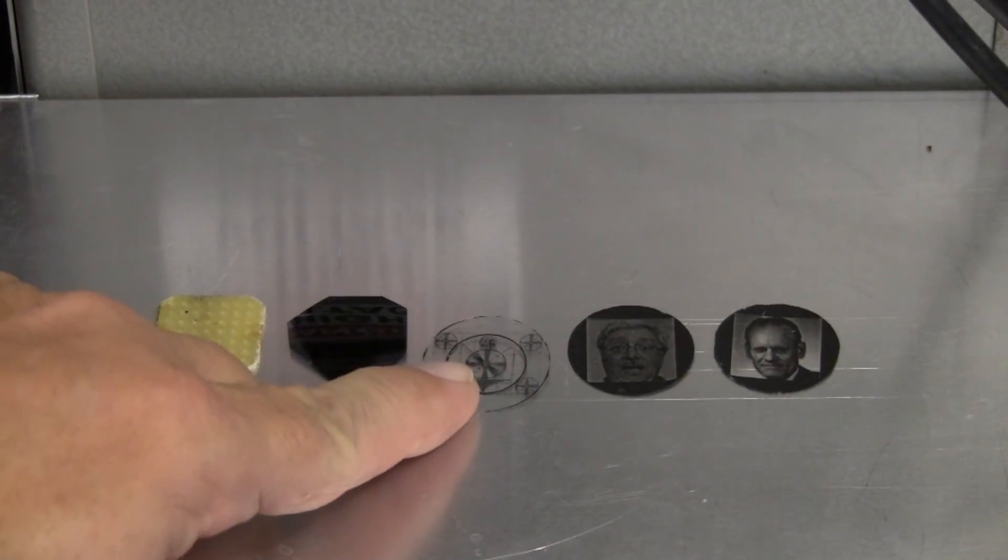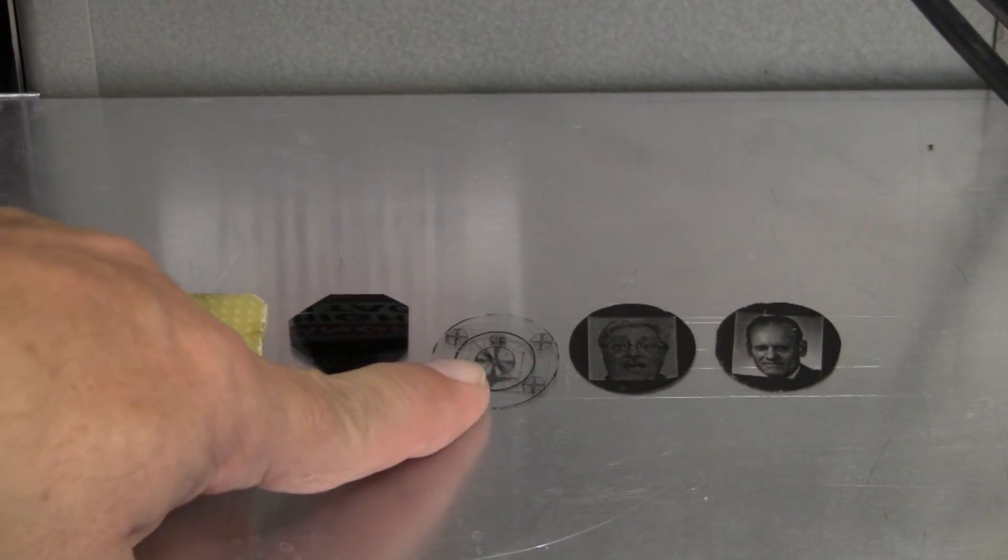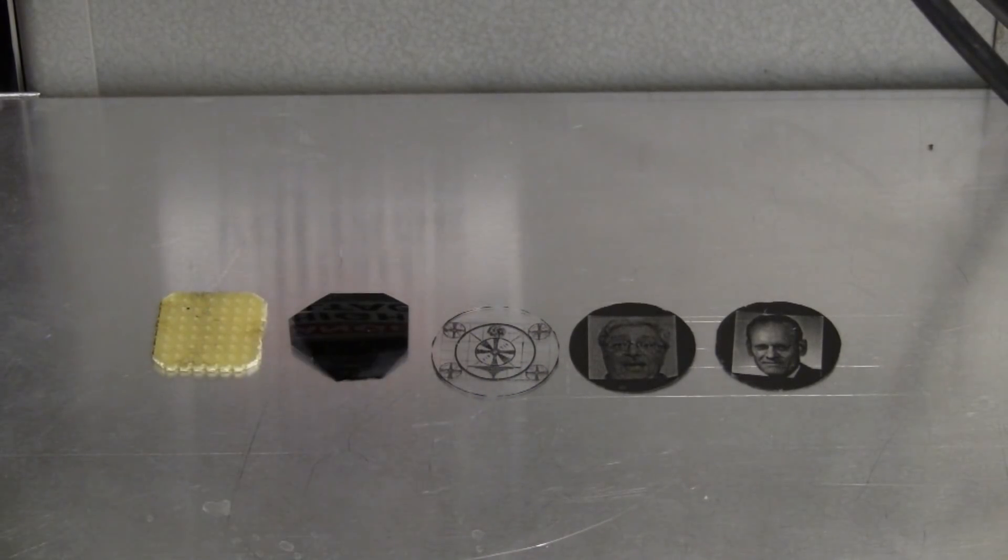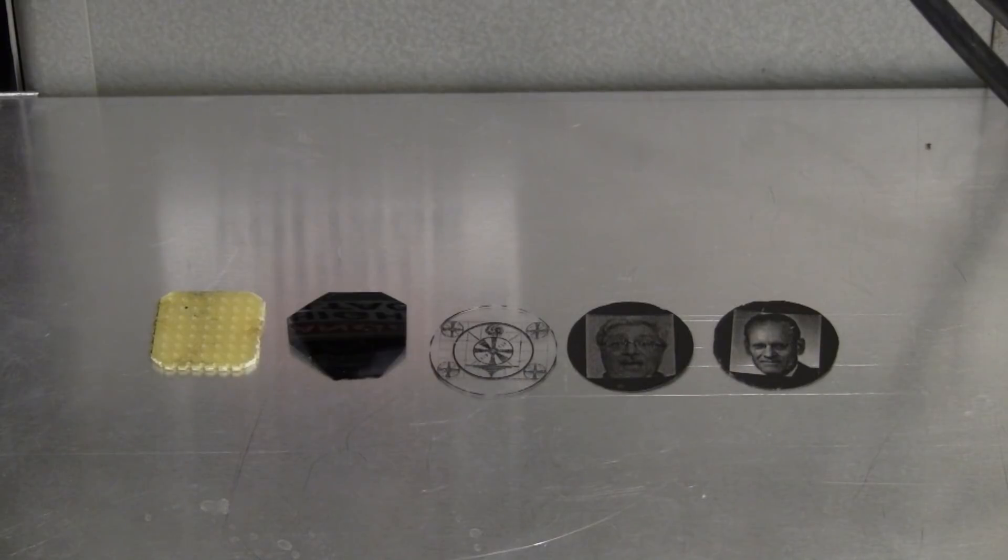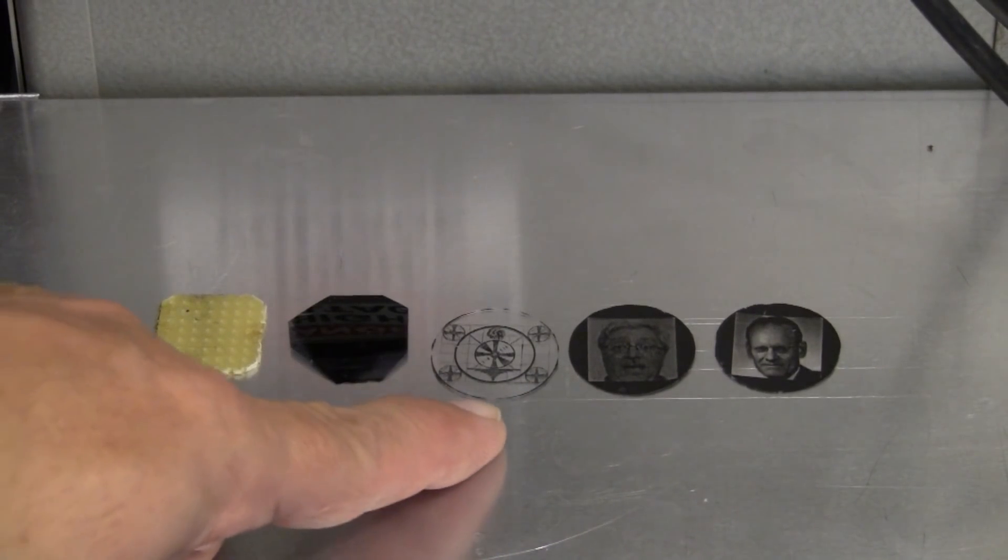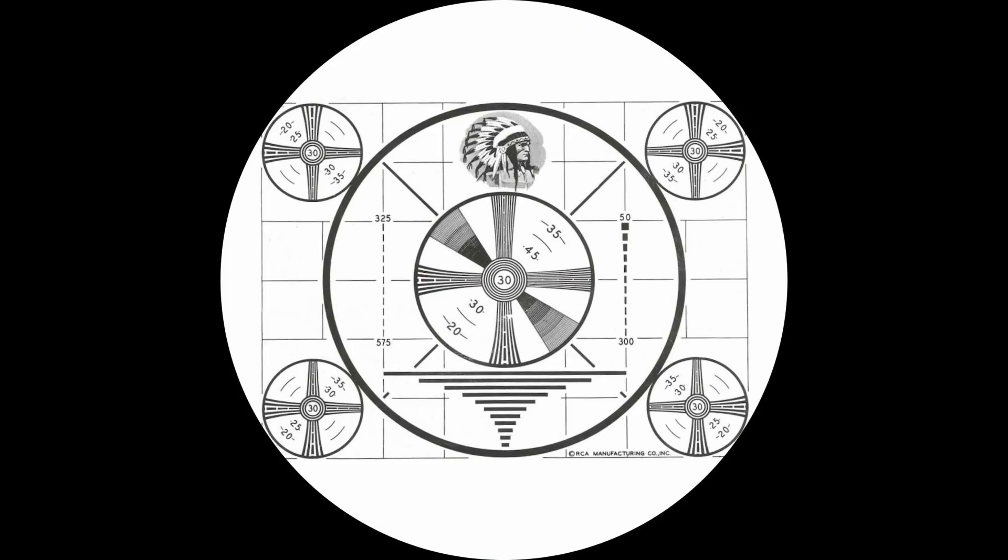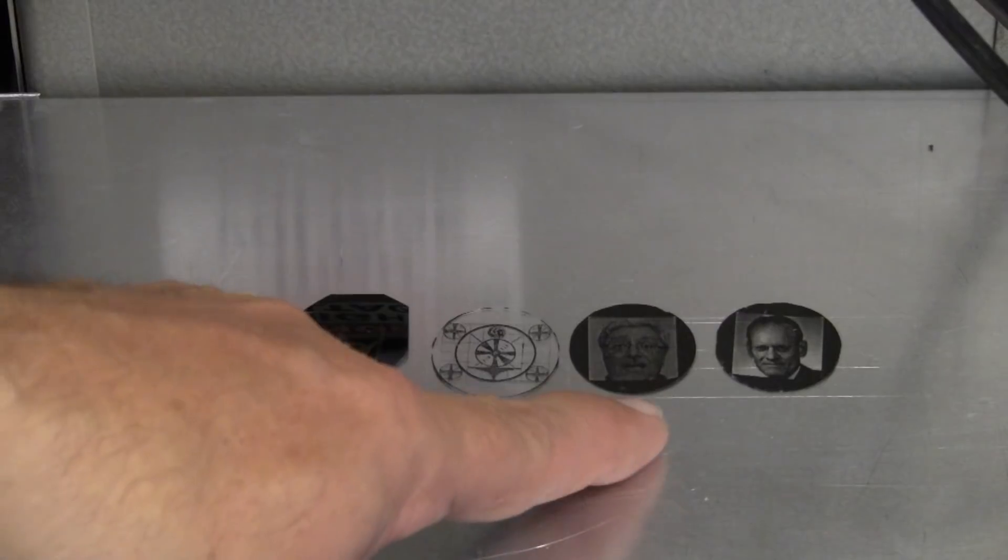Then I printed out some tiny slides on my printer. They are not very high resolution at this scale. They're just under one inch in diameter, and I printed out the Indian head test pattern, my own face, and Philo T. Farnsworth.